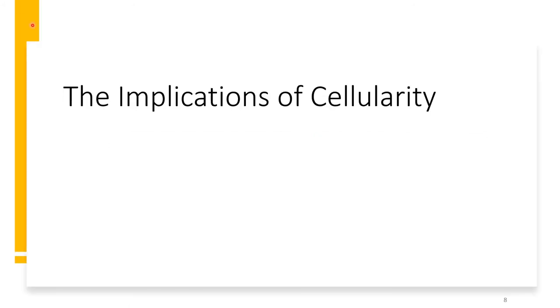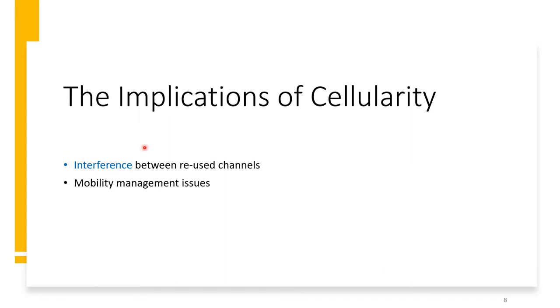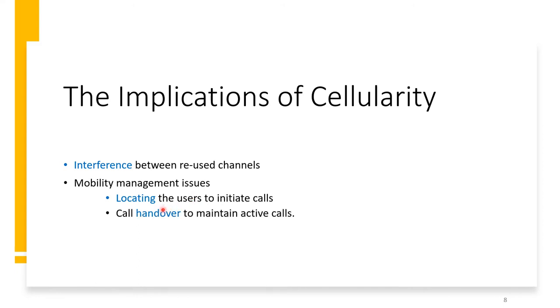The implications of cellularity: what is special about a cellular system compared to wireless systems in general? Since cellular systems reuse frequencies, we need to think about and handle interference. Also, because of the mobility associated with cellular systems, there is mobility management. We need to locate users to initiate calls, and we need to perform handoff or handover to maintain active calls when users move between cells.